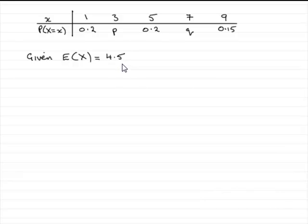So how do we form two equations with P and Q? Well, the first one is that you should know that the sum of all these probabilities comes to one.